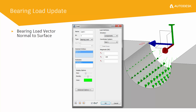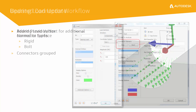We have also modified the bearing load so that the arrows point normal to a surface. This is a great way to simplify your model as you no longer have to create a cylindrical part to apply this load, as it can just be represented by this vector value.